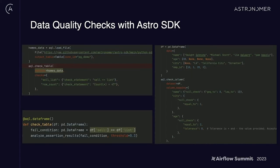It's also worth mentioning that the Astro SDK comes with a library of data quality checks. You can run table checks, column checks, and create your own custom data quality checks, which can not only be used as part of unit testing, but as part of your DAG itself to help catch data issues early.